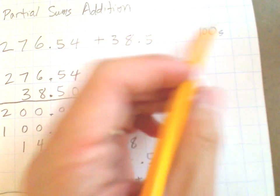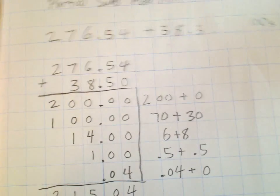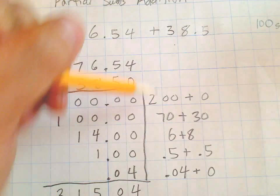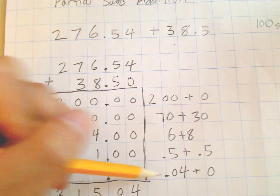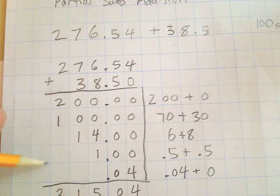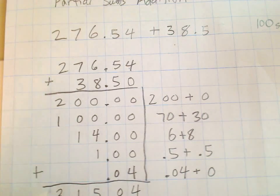Remember, all you have to do is think about every place value as a different problem. Write them all out first, then do all your additions, you'll get your answer every time.